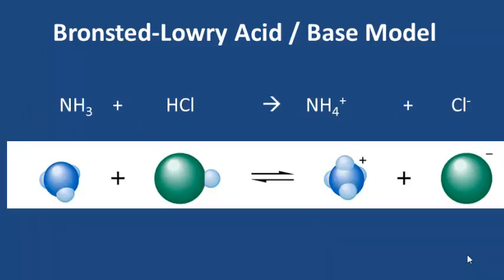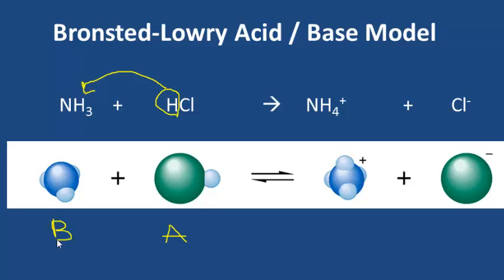Next, we have ammonia reacting with hydrogen chloride to form ammonium and chloride ion. The H goes from HCl over to the ammonia, so HCl is once again the acid. NH3, the ammonia, is what accepted the proton, so that's the base. On the product side, NH4⁺, the ammonium, is the ammonia with a proton added — that's the conjugate acid. The chloride ion is what's left behind, making it the conjugate base.